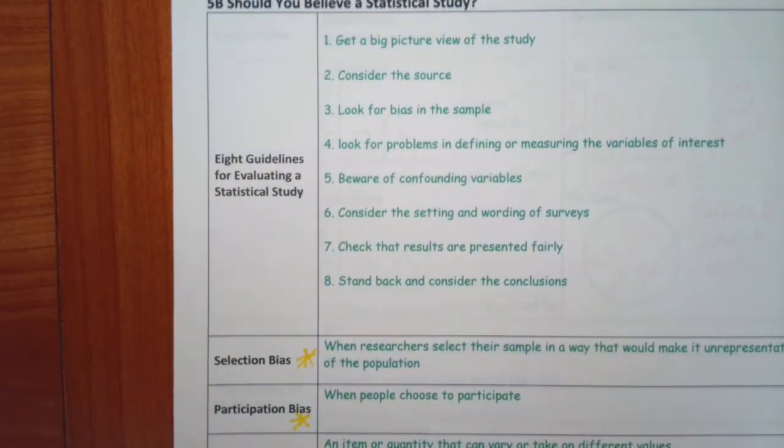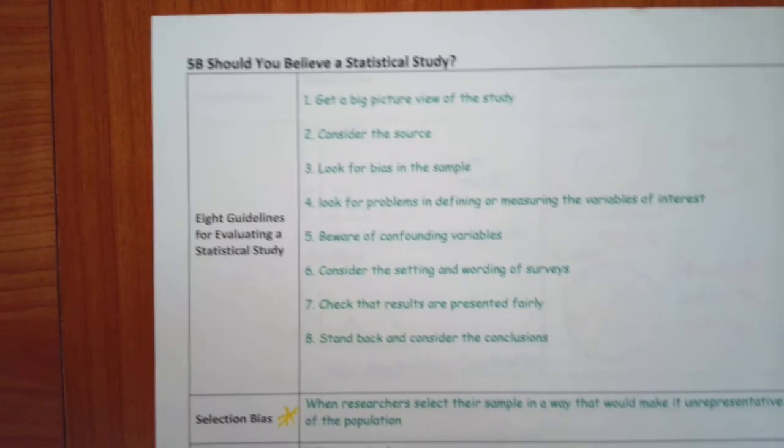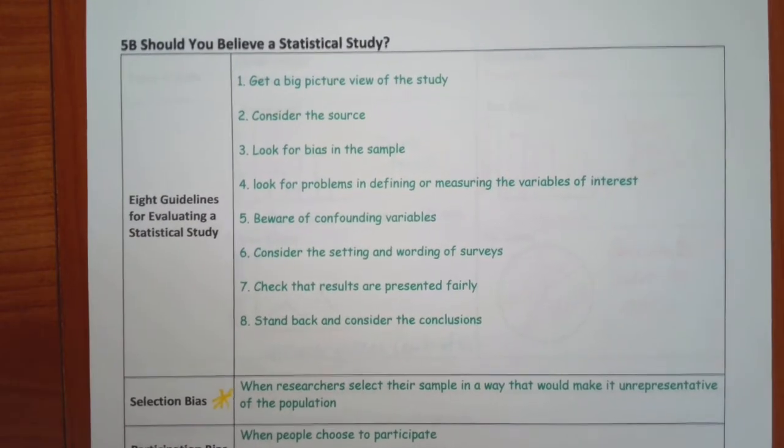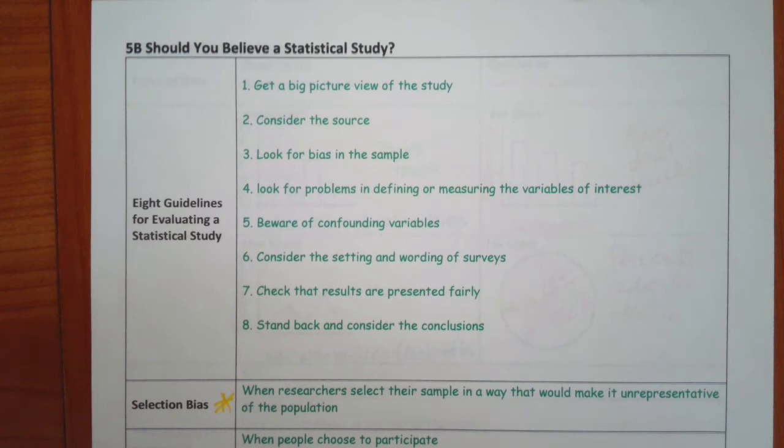5B then talked about should you believe a statistical study. And being skeptical and just by nature and plus knowing the math, I'm always wanting to know. And that's always my big problem when they do the projections and stuff on TV is they don't give you enough information. So you want to get a big picture. You want to consider the source. Look for bias. Look for problems in defining or measure the variables of interest. Beware of confounding variables, which we'll talk about later. Consider the setting and wording of the surveys. Check that the results are prevented fairly. And stand back and consider the conclusions. What does it really mean?